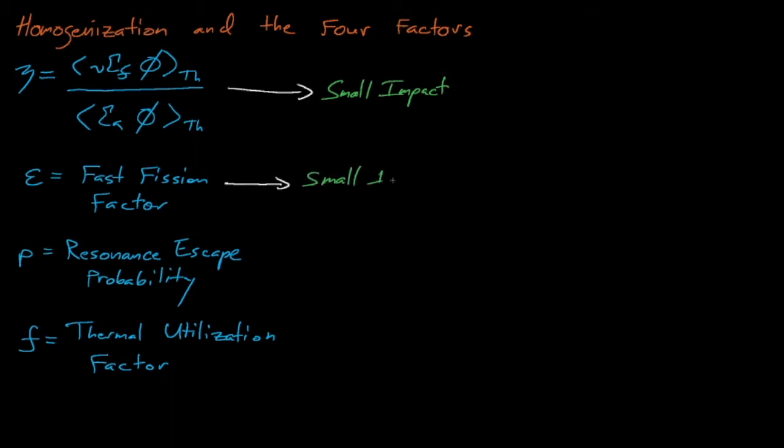which means that eta can be insulated even more by spectral changes. In reality, eta mostly just depends on what isotope is being used as the fuel in a reactor. The fast fission factor isn't really affected by homogenization either. Homogenization may have a small impact on the fast fission factor, but it's usually not very significant,